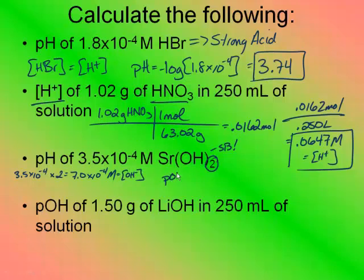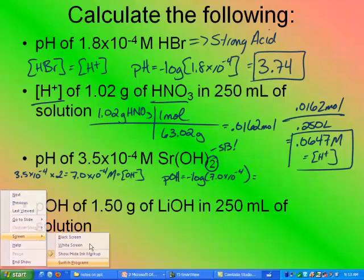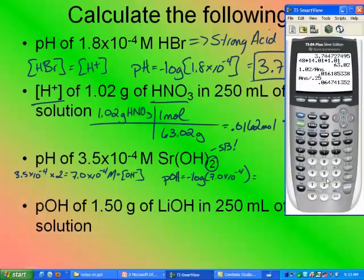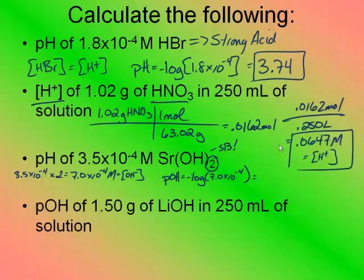If I take the negative log of that, that gives me pOH. So I'm going to take the negative log of 7.0 times 10 to the negative 4. And I get 3.15 and 14 because I asked for the pH. 14 minus that number will be the pH. This is 3.15 and then 14 minus 3.15 is equal to 10.85. And that's my pH.